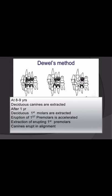Dewell's method is commenced at around 8 to 9 years of age. First, the deciduous canines (C) are extracted, followed by a gap of one year. Then the deciduous first molars (D) are extracted, which accelerates eruption of the first premolar into its space. The erupting first premolars are then extracted, allowing proper space for the permanent canines to erupt in proper alignment. The sequence to remember for Dewell's method is: C, D, 4.